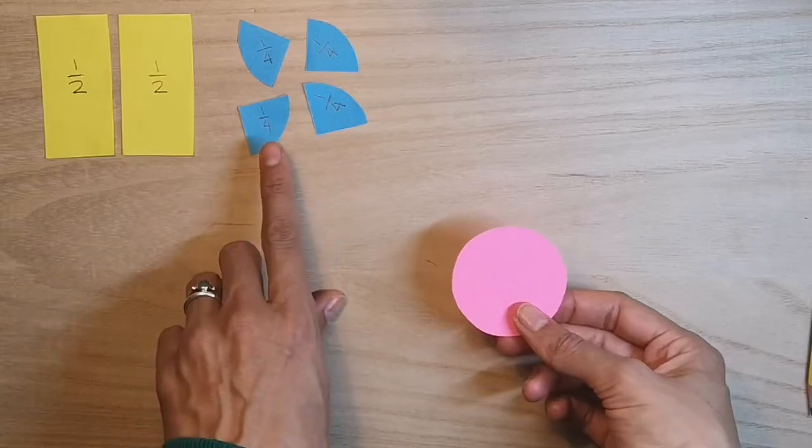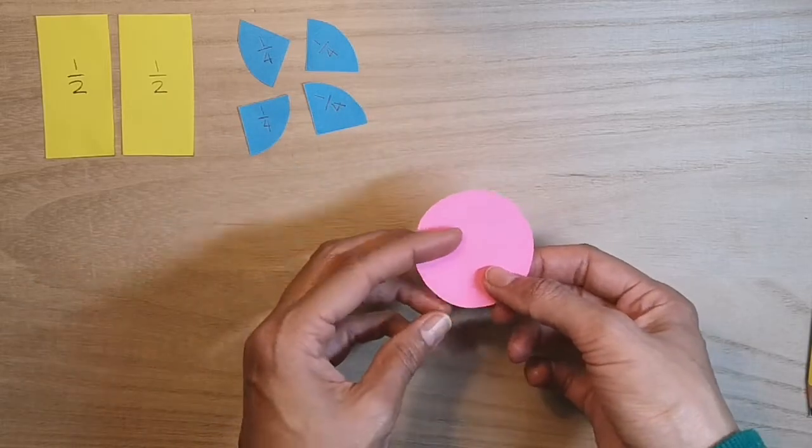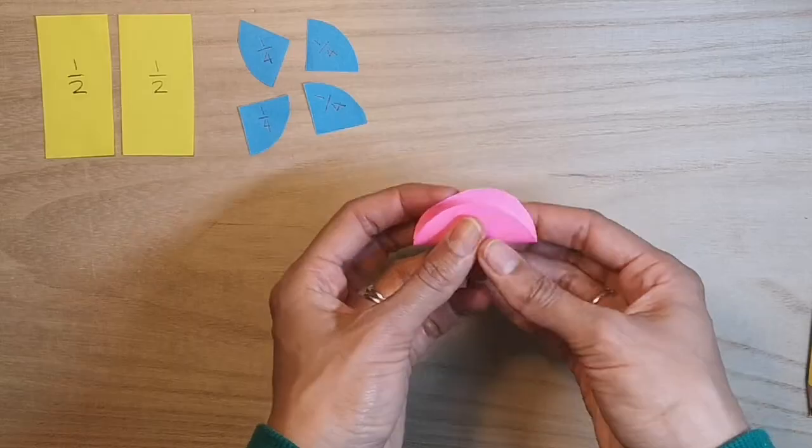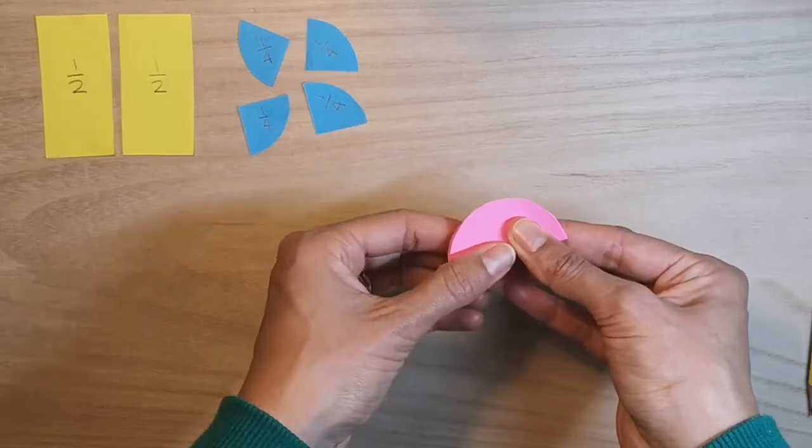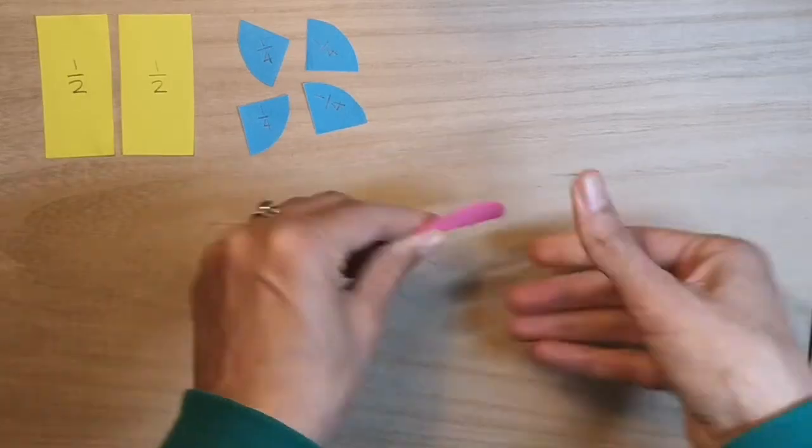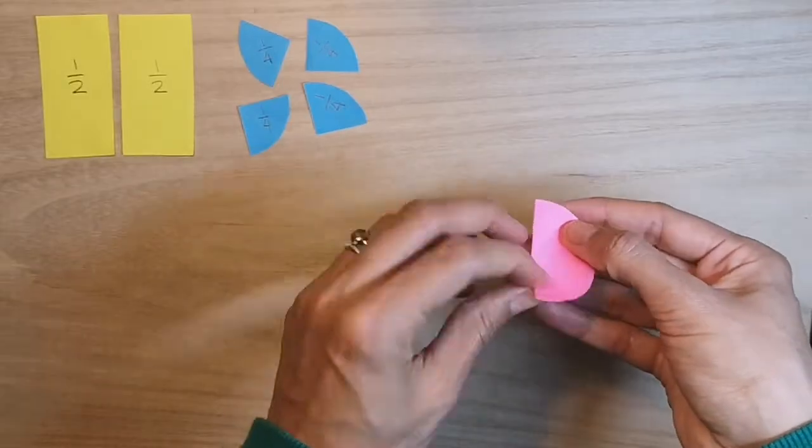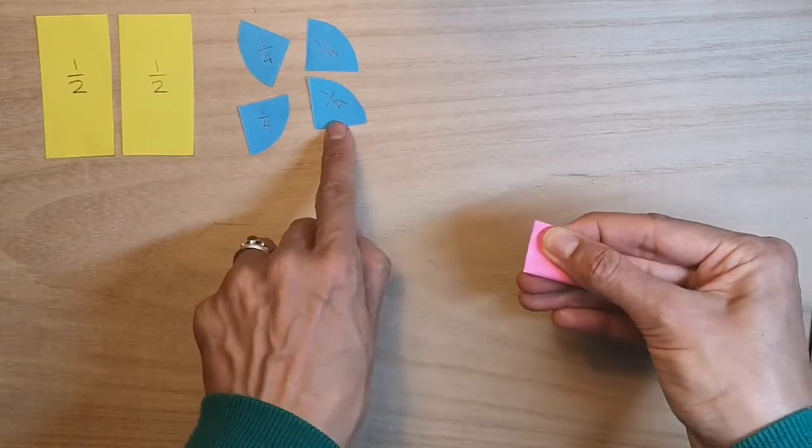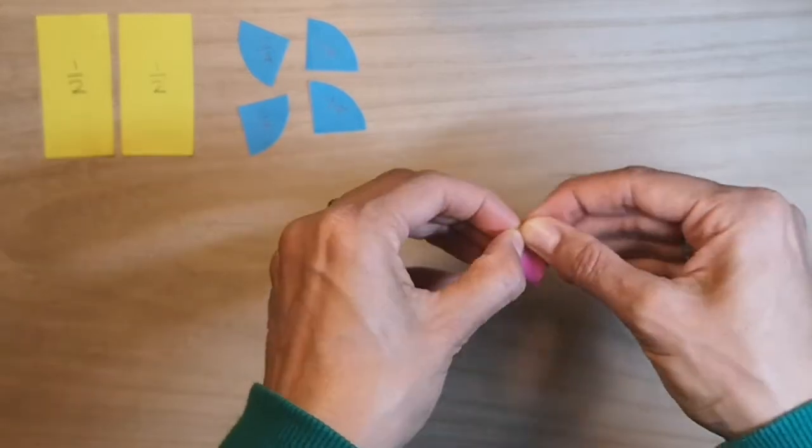Okay, I've got halves, I've got quarters, I really want some eighths. So I've got a circle, I'm going to fold it in half. I'm going to fold that in half again, which we now know will give us quarters.